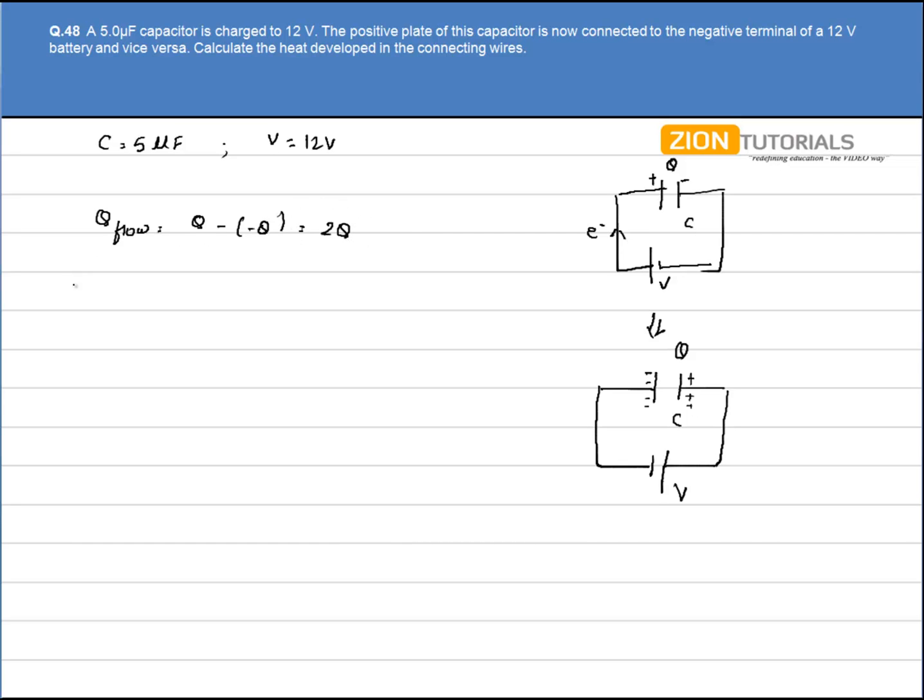The initial energy of the capacitor will be half of Q²/C and final energy will be minus of half of Q²/C because now the polarities change.